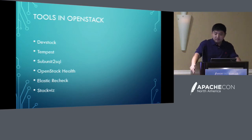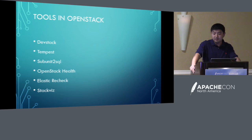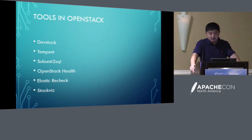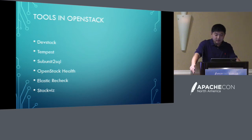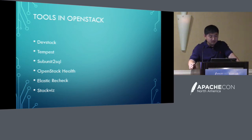Next I will quickly introduce the most important tools we use in OpenStack QA and CI for better testing. I will introduce the following tools: DevStack, Tempest, SubUnit2Circle, OpenStack Health, Elastic Recheck, and StackViz.